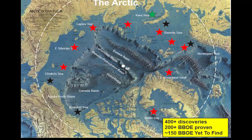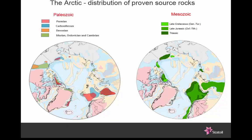Why is the Arctic so good? Well, this is one of the reasons — this basically shows the distribution of known source rocks in the Arctic. Hydrocarbon source rocks, again in polar projection. On the left, Paleozoic source rocks; on the right, Mesozoic source rocks. The darker colours show the source rocks themselves — wherever you see dark shading, that's a known source rock. These include several major groups which contribute to the Arctic reserves.